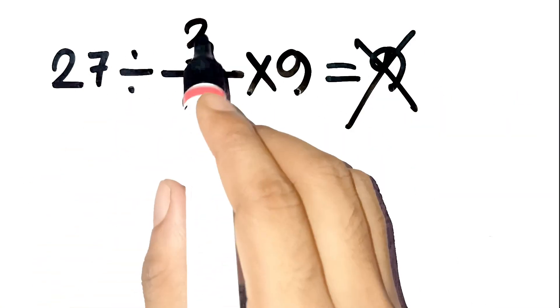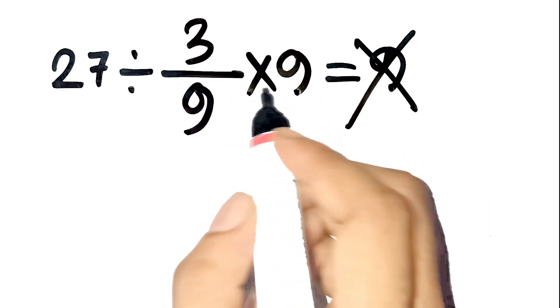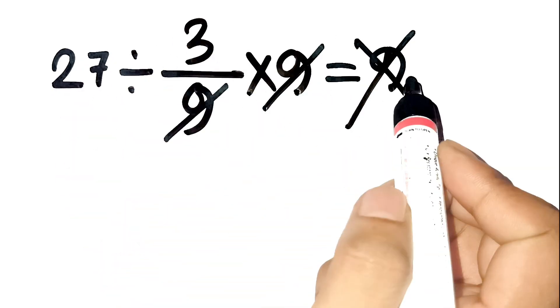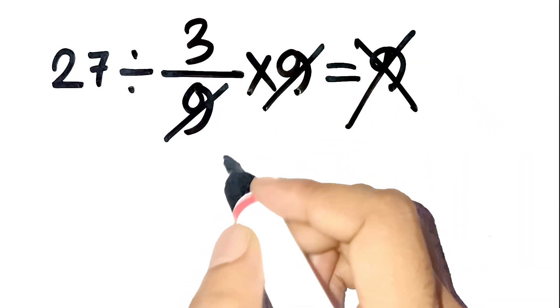You see 27 divided by 3 over 9 times 9, and you think, okay, the 9s cancel. 27 divided by 3 is 9. Boom, done. Right?